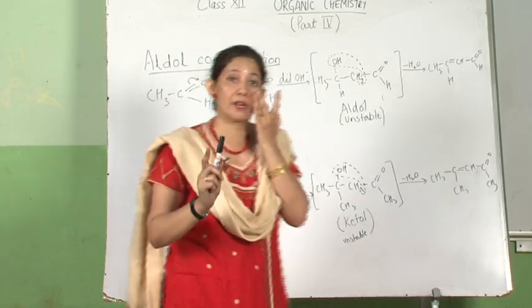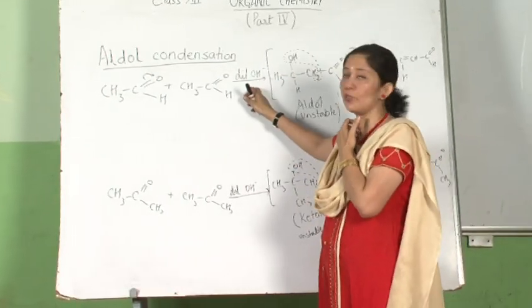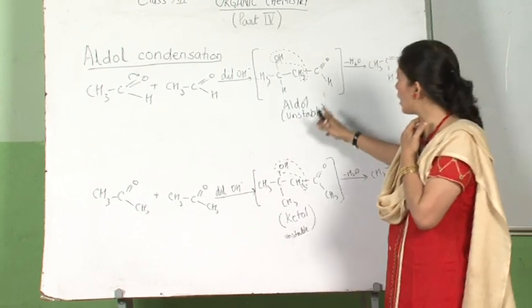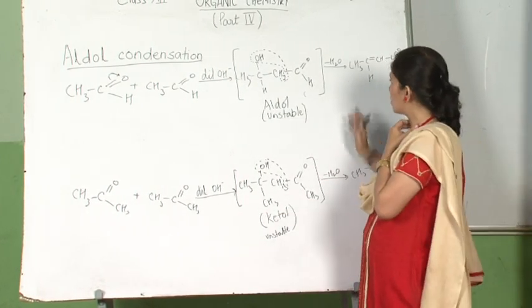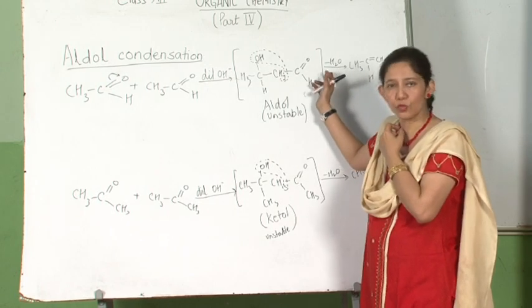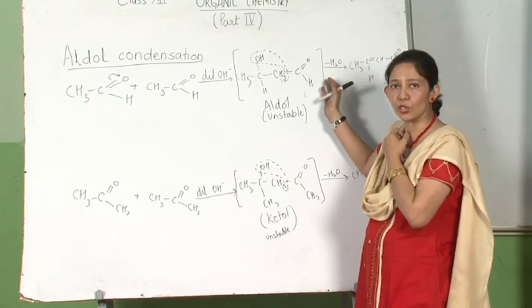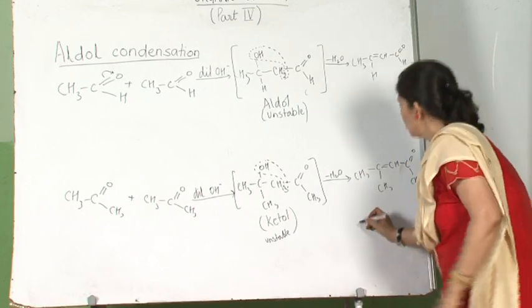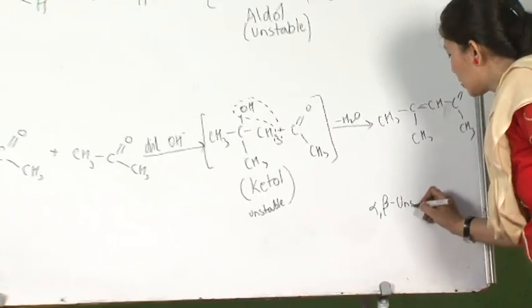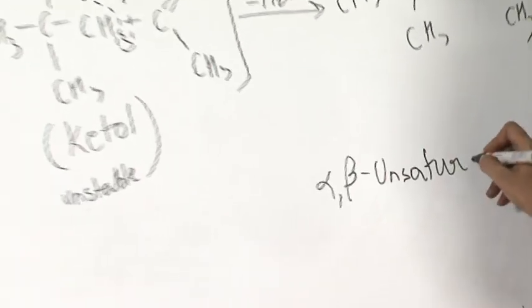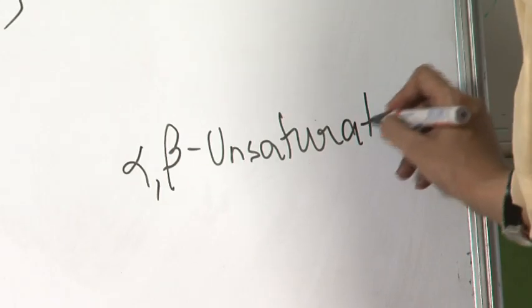Aldol condensation involves compounds containing at least one alpha hydrogen in presence of dilute alkali to give an unstable aldol or ketone. To get it stabilized, it removes an H2O molecule, eliminating water to give rise to an alpha-beta unsaturated compound.